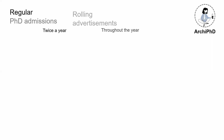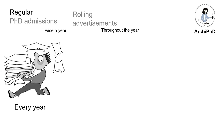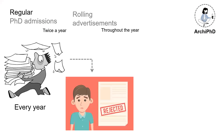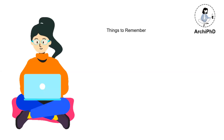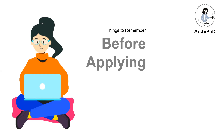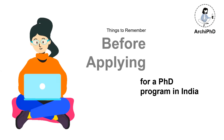Usually in India, regular PhD admissions happen twice a year, while admissions through rolling advertisements occur throughout the year. Every year, the number of applications submitted for a PhD program is increasing. I personally have seen many such applications getting rejected or turned down due to basic mistakes that jeopardize the admission chances of many prospective candidates. The reasons range from lack of information, incomplete or inappropriate applications, or missed deadlines. So in order to avoid these mistakes, my very first video is solely dedicated to provide information on things to remember before applying for a PhD program in India. So let's begin.